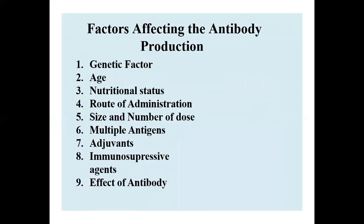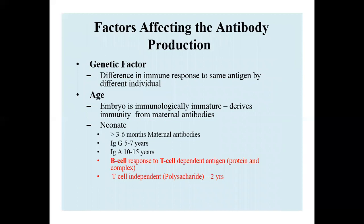Antibody production is affected by several factors: genetic factors, age, nutritional status, route of administration, size and number of dose, multiple antigens, adjuvants, immunosuppressive agents, and effects of other antibodies. Genetic factors account for differences in immune response to the same antigen by different individuals. The same antigen can elicit different antibody responses in different organisms.